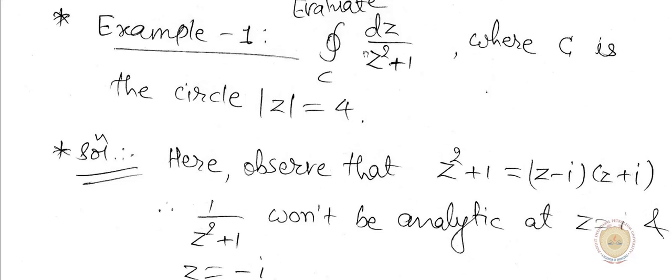The function is 1/(z² + 1). If you consider the zeros of z² + 1, those are the singularities of 1/(z² + 1). We can factor z² + 1 as (z − i)(z + i). So 1/(z² + 1) will not be analytic at these two points, and these are the singularities.